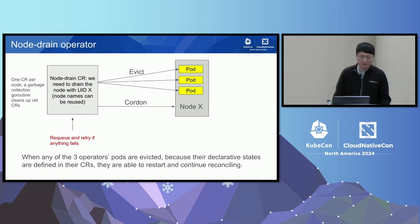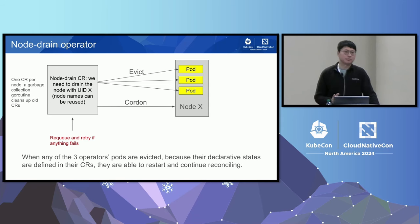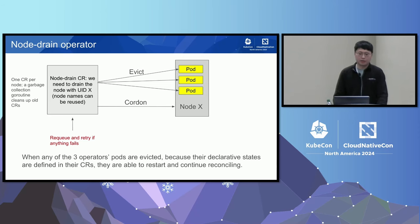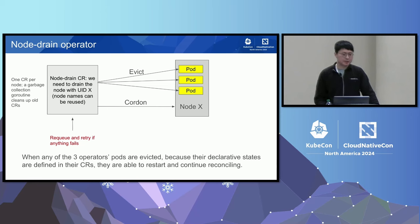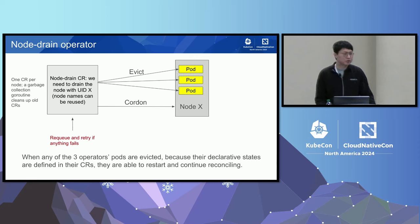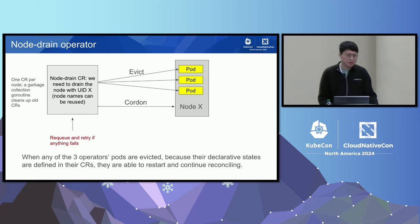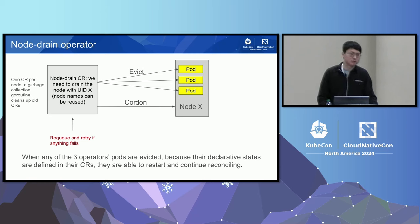The first operator is the node drain operator. To safely move workloads from old nodes to new nodes, you use the eviction API in Kubernetes. The node drain operator watches node drain CRs. The spec specifies a declarative state — essentially saying 'drain the node with UID X.' We use UIDs because node names can often be reused. We have one CR per node, and a garbage collection goroutine cleans up old CRs. The reconciliation loop tries to evict all pods on the node using the eviction API, and cordons the node to prevent new pods from landing. If anything fails, it re-queues and retries.